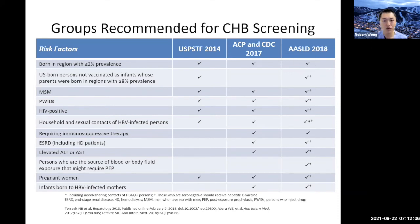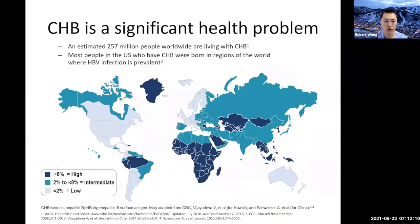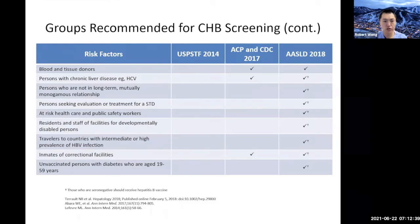Why is that important? Greater than 2% prevalence really means anything that is not great — all of Asia-Pacific, all of Africa, most of South America. Many of the individuals joining this call are from these regions, and really universal hepatitis B screening may be a reasonable approach to try and diagnose these patients earlier. In the U.S., the main driver for screening is country of origin as well as risk factors.